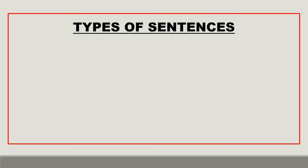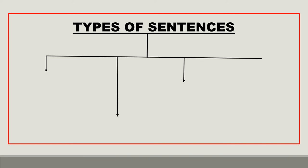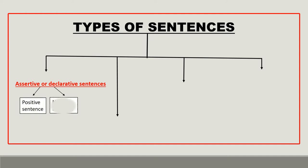So now we are going to talk about types of sentences. There are four types. First, assertive or declarative sentences. Assertive or declarative sentences simply say something. They are of two types: positive or negative sentences.